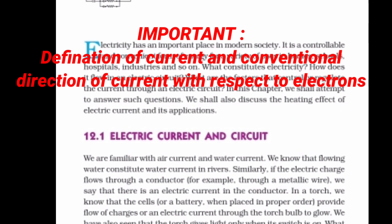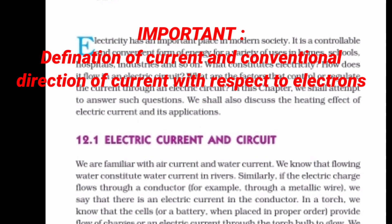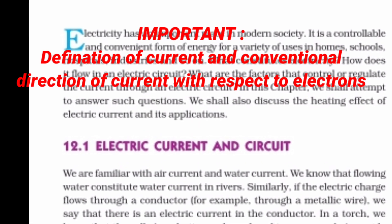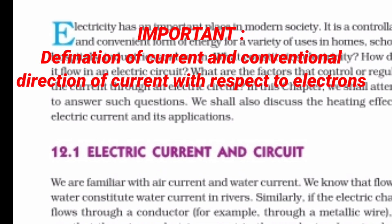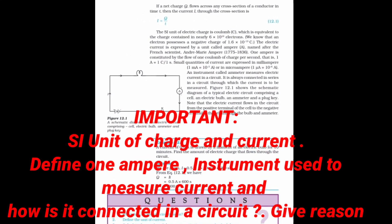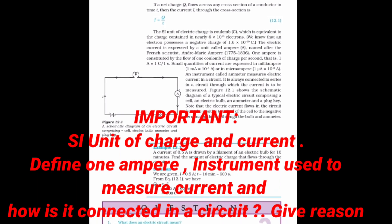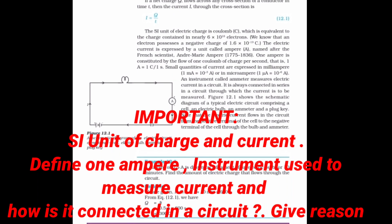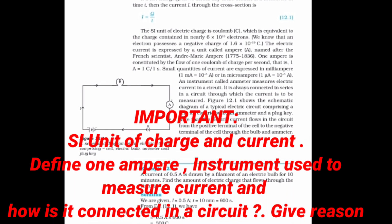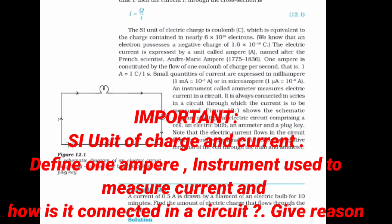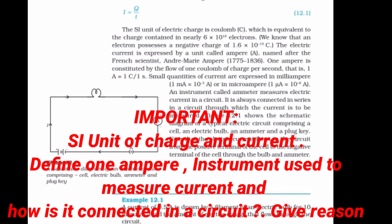Please develop the patience to study slowly and continue the process until the end of the chapter. On the second page, highlight important concepts such as the SI unit of charge and current, define one ampere, the instrument used to measure current, and how it is connected in a circuit — give reason.